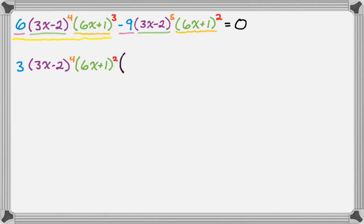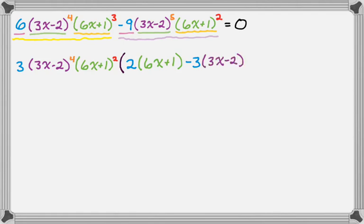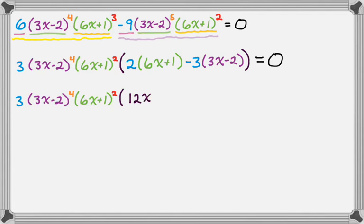If I take 3 out of 6, I'm left with 2. Taking 3x minus 2 to the 4th out leaves 1, and taking 6x plus 1 squared out leaves one factor of 6x plus 1 in parentheses. For the second term: 3 out of negative 9 leaves negative 3; 3x minus 2 to the 4th out of 3x minus 2 to the 5th leaves 3x minus 2 to the 1st; and 6x plus 1 squared out leaves 1. Close the parentheses, equals 0. Then distributing inside: 2 times 6x plus 1 gives 12x plus 2, and negative 3 times 3x minus 2 gives negative 9x plus 6.